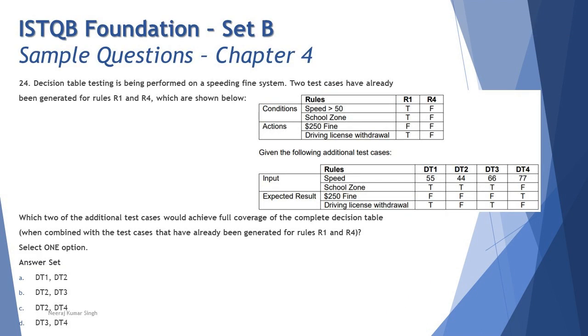The next question we are talking about is question number 24, and this comes along with the test decision table technique. The question is as follows: Decision table testing is being performed on a speeding fine system. Two test cases have already been generated for rules R1 and R4, which are shown below. If you look at the diagram or the table displayed on screen, it shows the set of conditions where speed is greater than 50 and if it is a school zone, then the action is either a 250 dollar fine or driving license will be impounded or withdrawn.